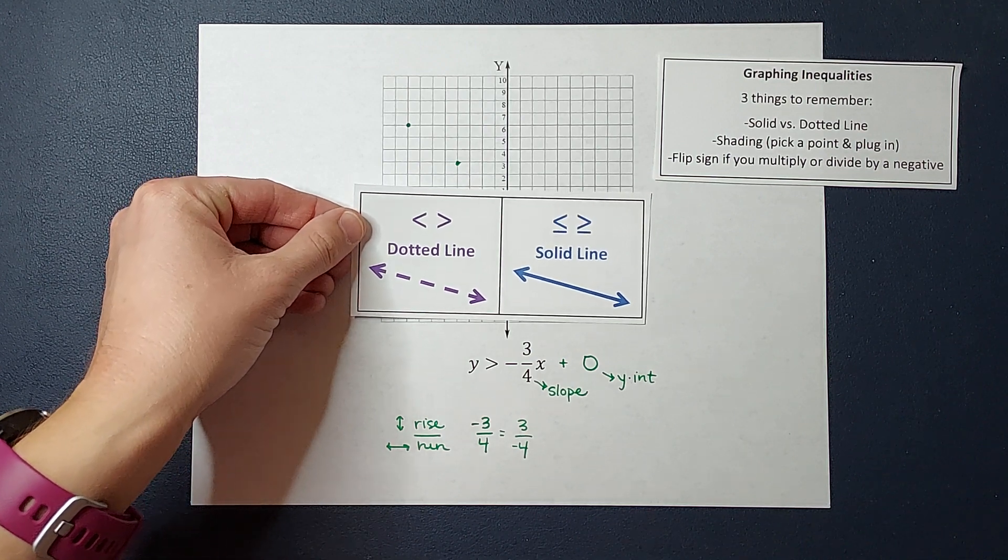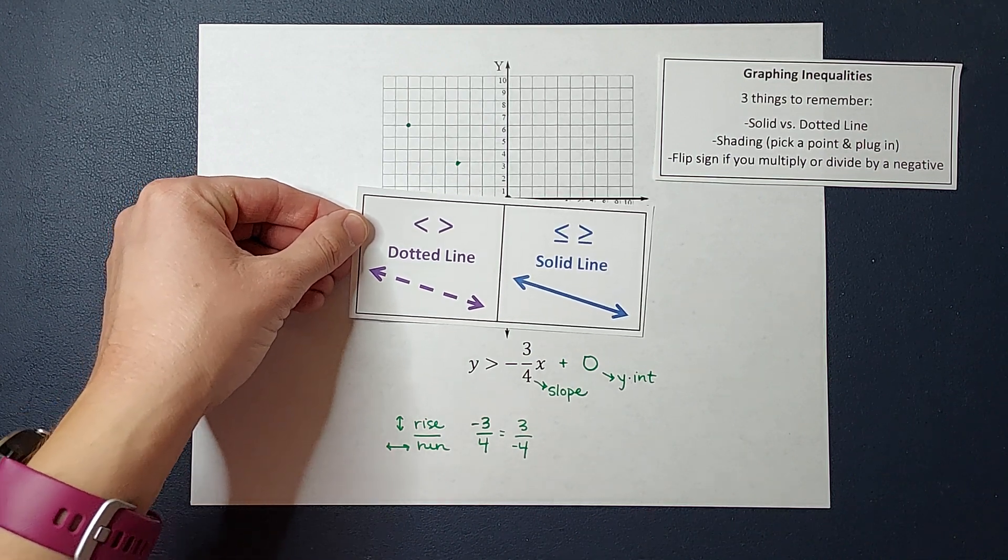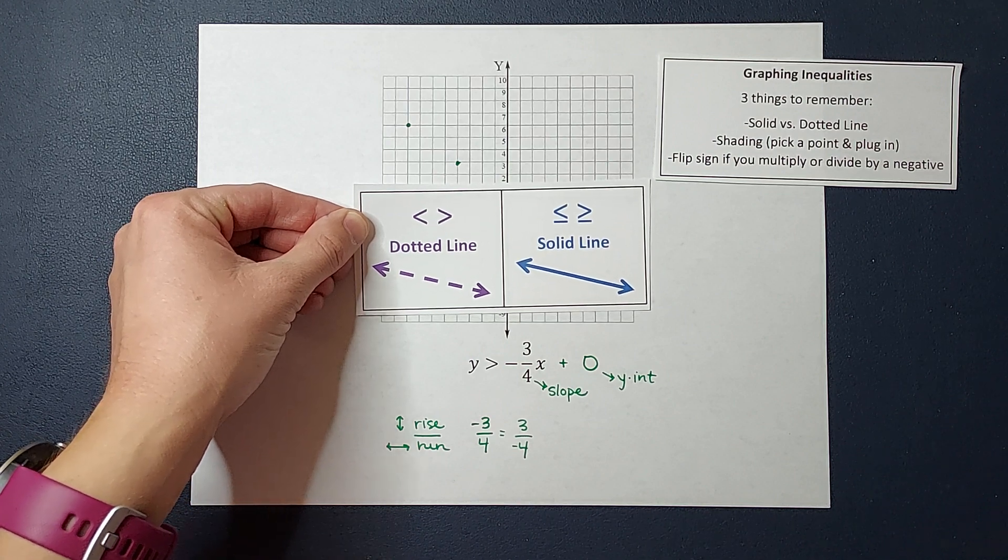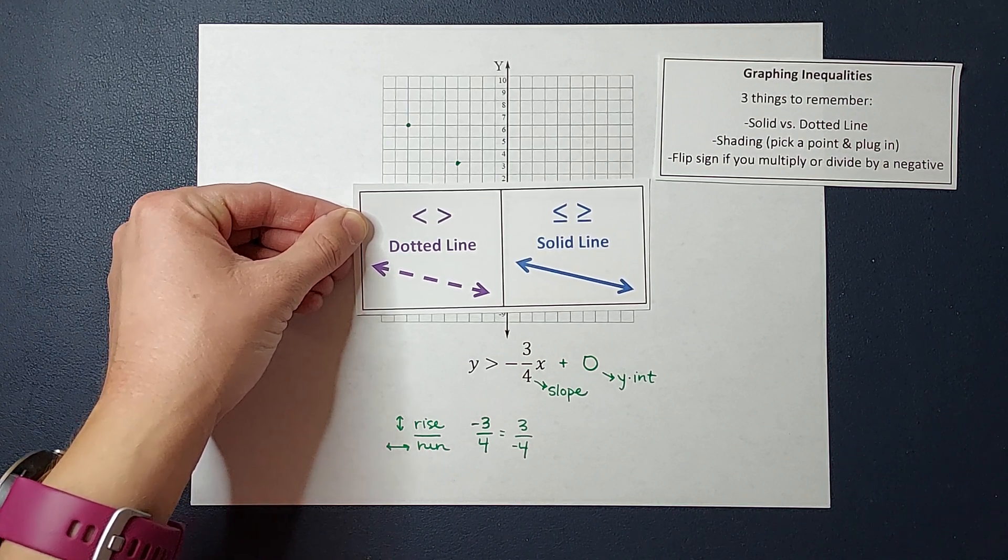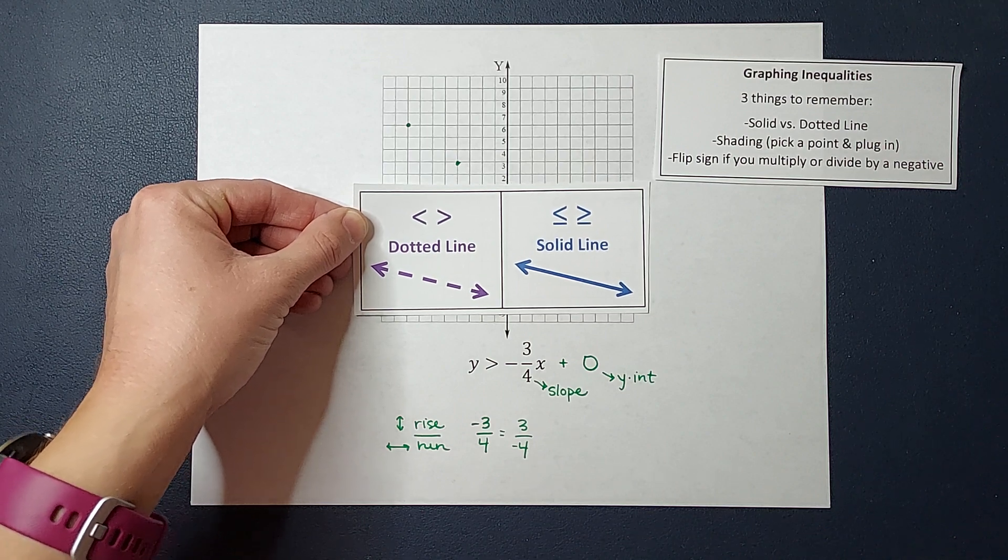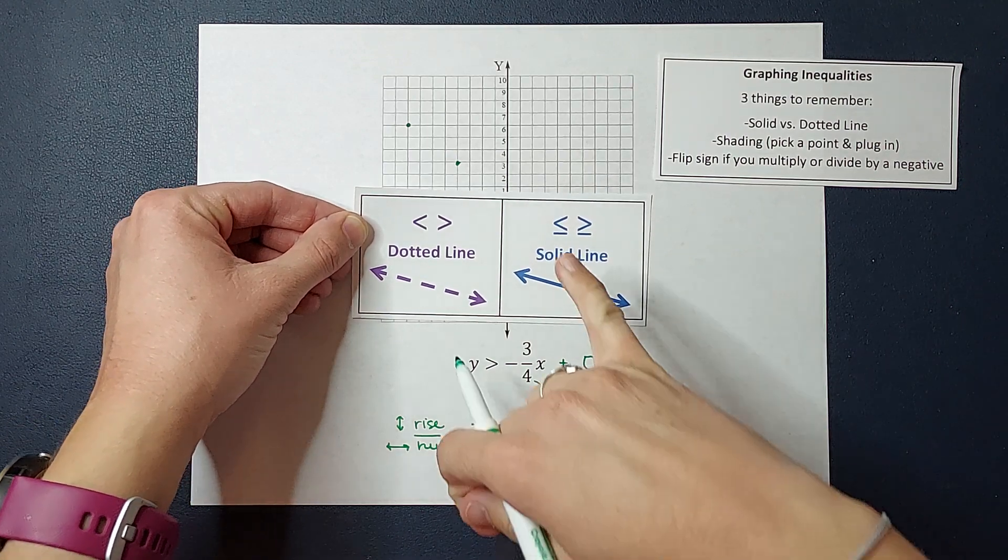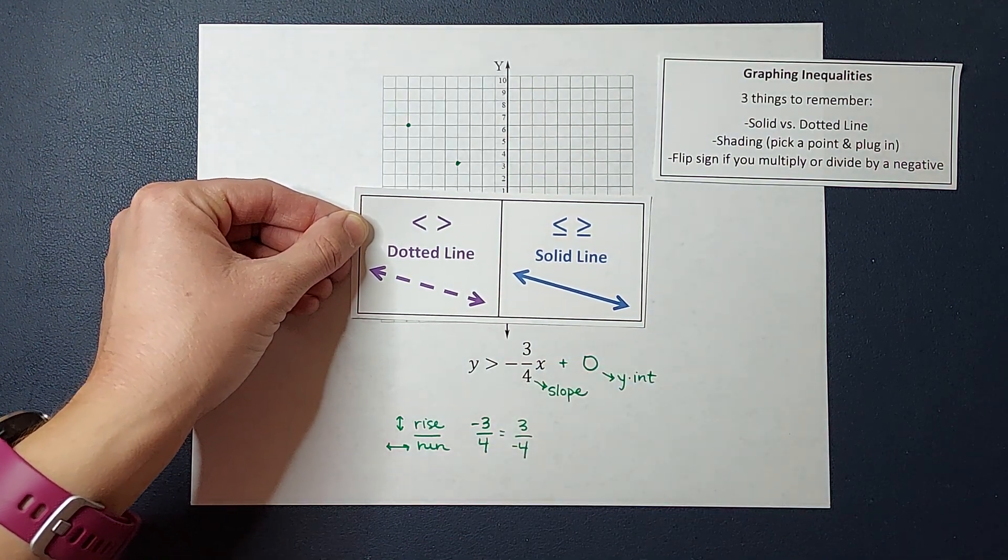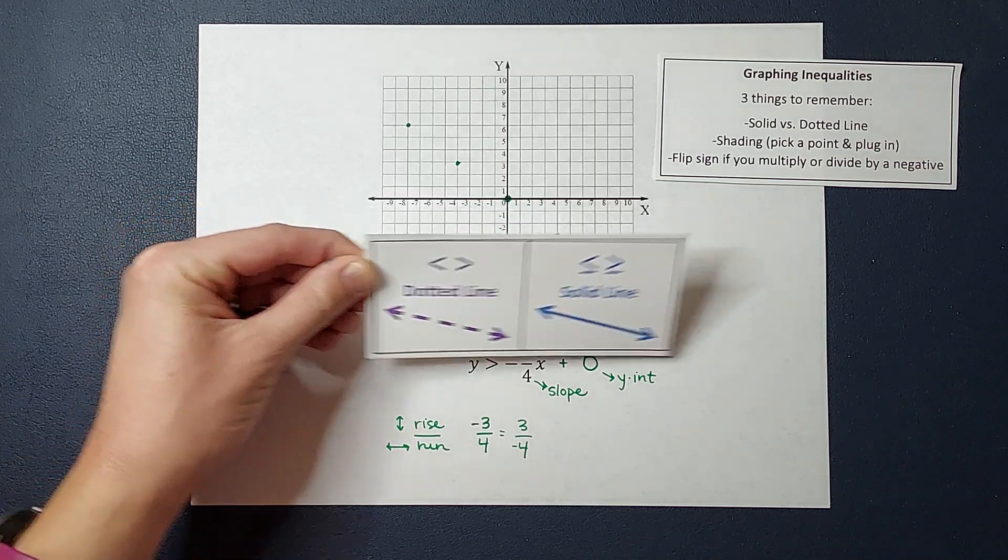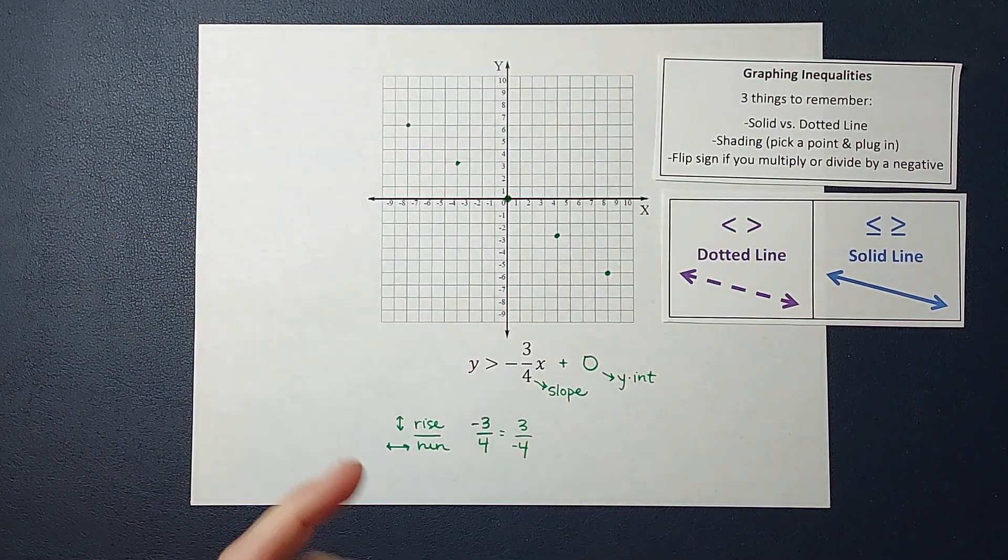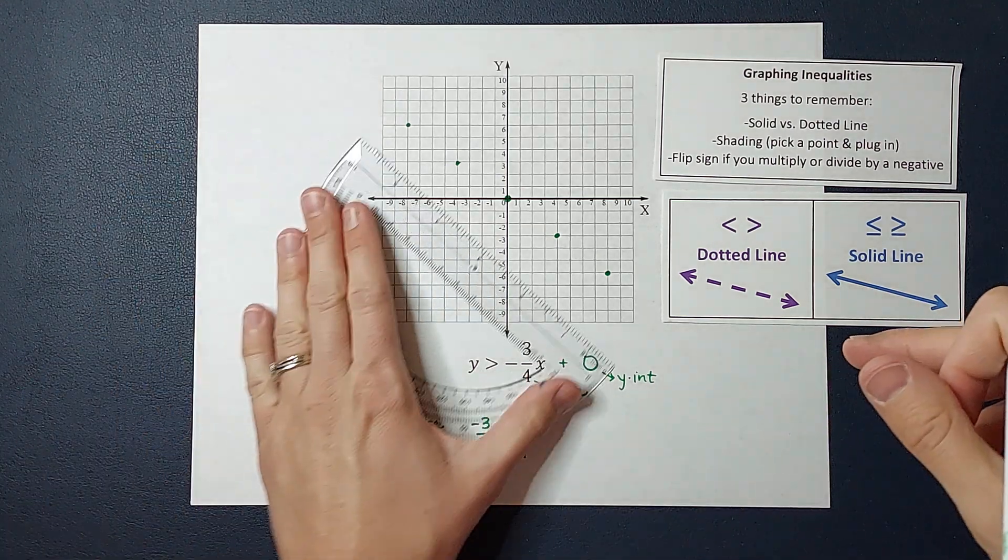If I have less than or greater than, it is going to be a dotted line because with an inequality, when you have less than or greater than, that line is acting as a boundary, but I don't actually have any answers along that line. When we have less than or equal to or greater than or equal to, it is a solid line because answers lie along the line. Since this is Y is greater than, it is going to be a dotted line.